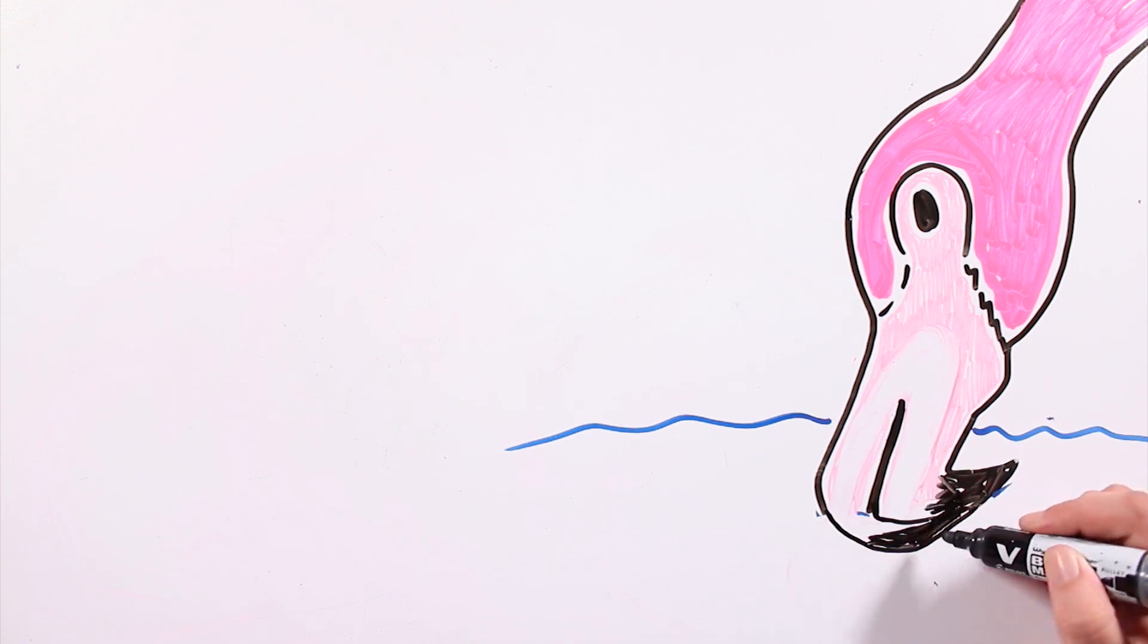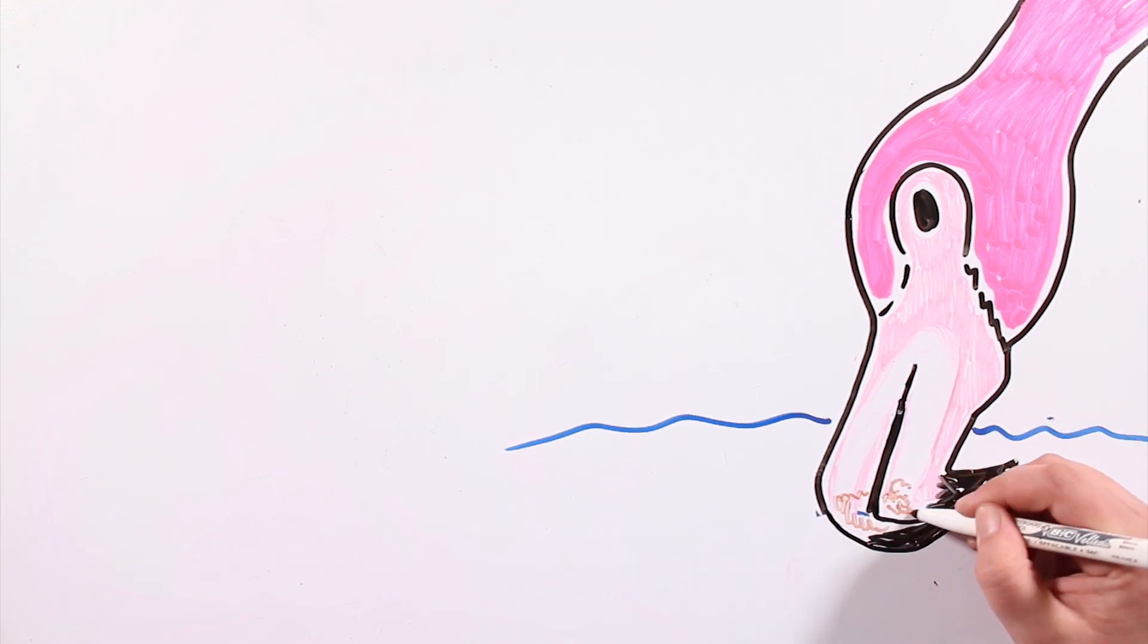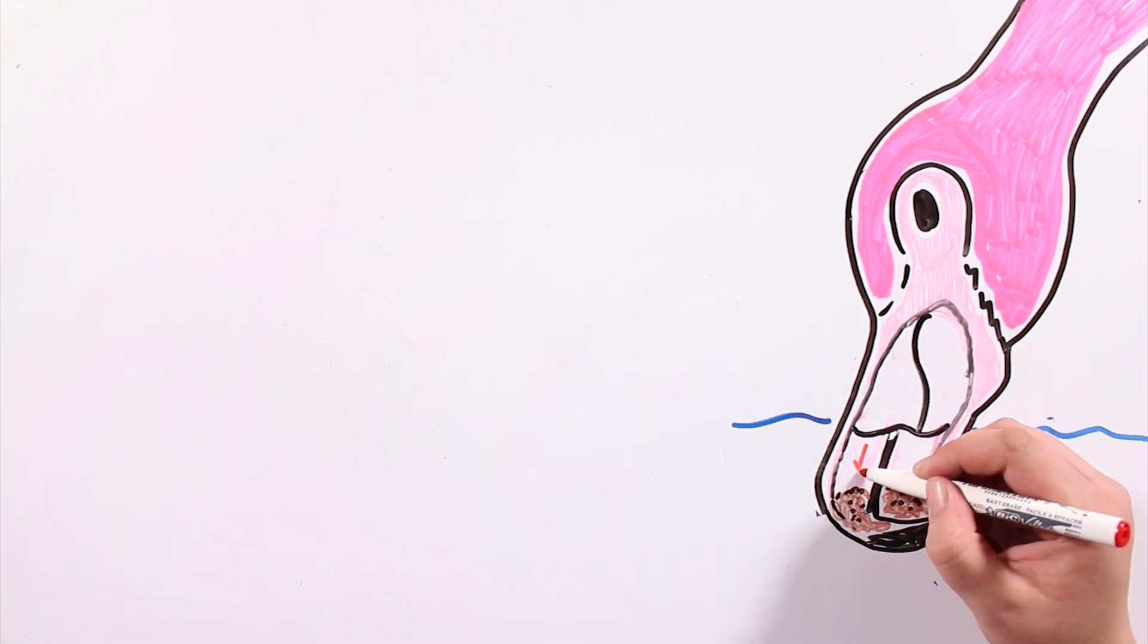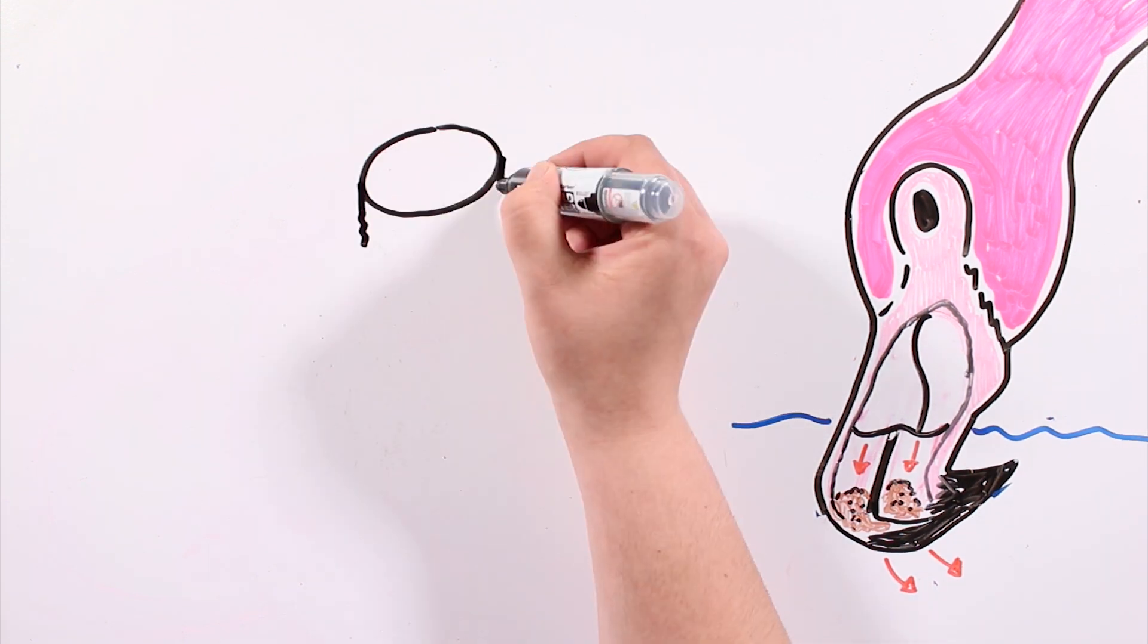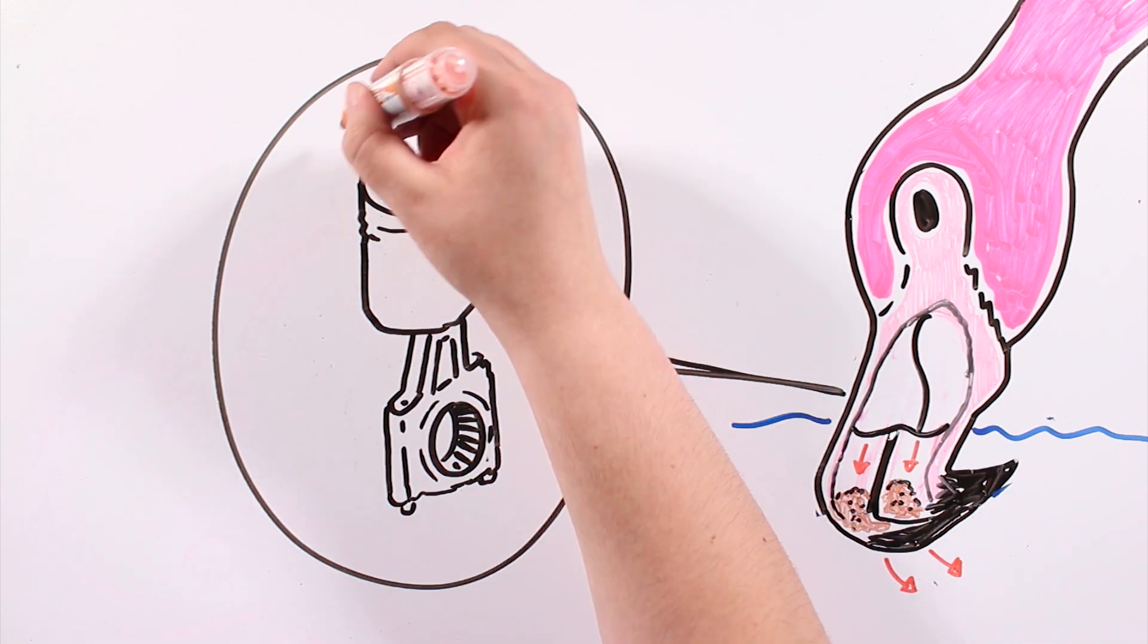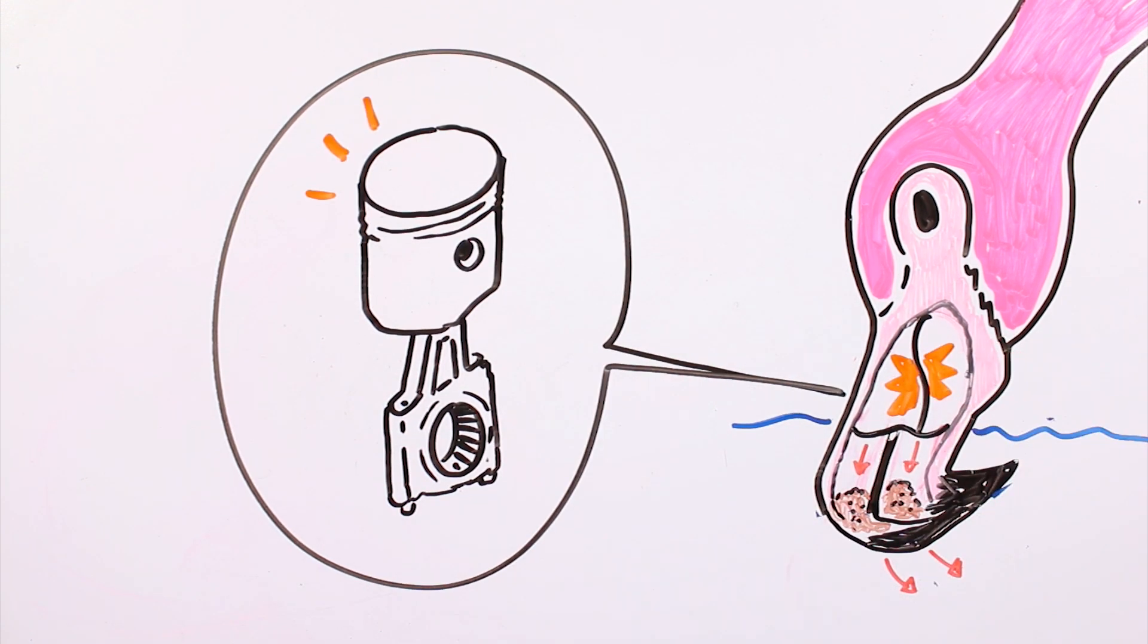Flamingos are filtering animals. That means they take in the water and food to later on throw it out of their bodies. Their beak has a unique design, and their tongue has a very curious way of working. Lots of researchers compare it to the piston of a vehicle. They get food and water through the tongue in order to filter them later on.